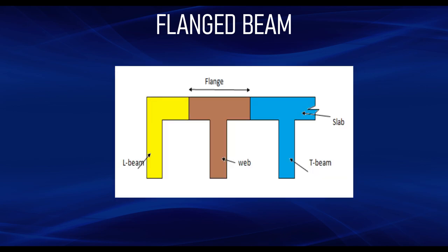Generally, we know that a beam can be designed as either a rectangular beam or a flange beam. When do we design a beam to be a flange beam? This is when the beam is connected to a slab at the top. Flange beams are also divided into two types: we have the T beam and the L beam.